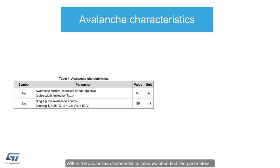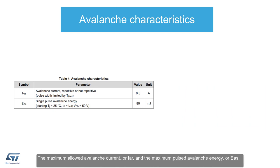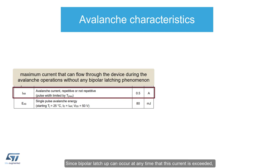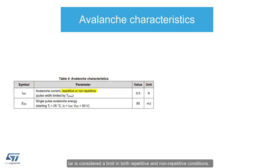Within the avalanche characteristics table, we often find two parameters: the maximum allowed avalanche current, or IAR, and the maximum pulsed avalanche energy, or EAS. The IAR is defined by the maximum current during an avalanche condition that avoids latching of the parasitic bipolar transistor in the MOSFET structure, and the subsequent degradation of the MOSFET voltage blocking ability that follows. Since bipolar latch-up can occur at any time that this current is exceeded, IAR is considered a limit in both repetitive and non-repetitive conditions. Operation below the IAR value can be considered safe.